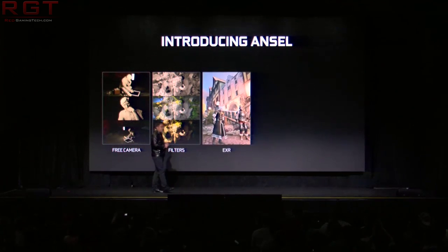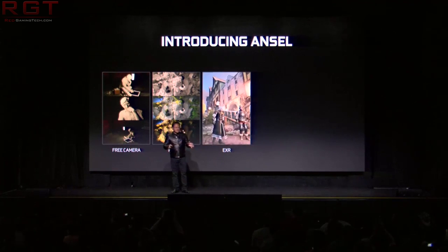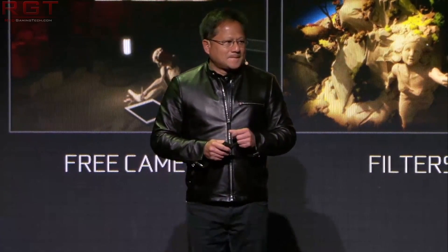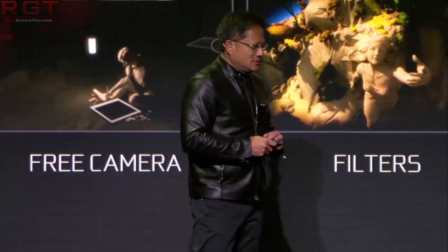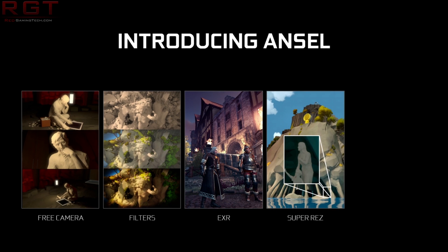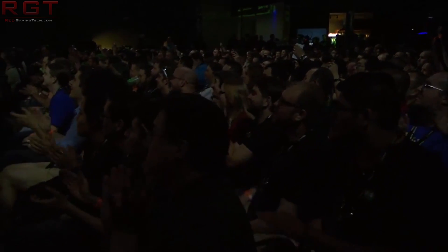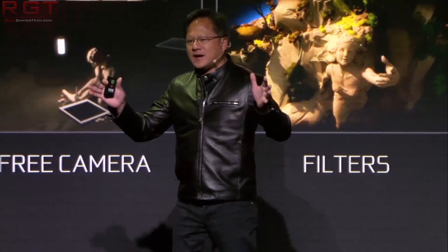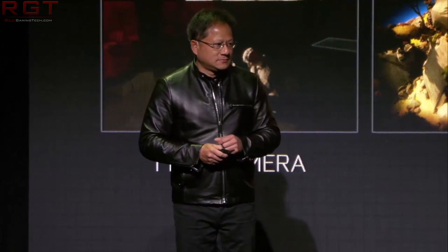I want to touch on one of the last points of the video, and that is the new capture software, Ansel. Ansel is one of those extras that is definitely going to be very cool. It basically takes the notion of being able to print screen or use Fraps image capture and says that's not needed anymore. With Ansel, you can basically have a free-roaming camera in-game. It's important to remember that not all games are going to support this — they have to be supported in-engine, so it won't work with older titles like Quake 1.